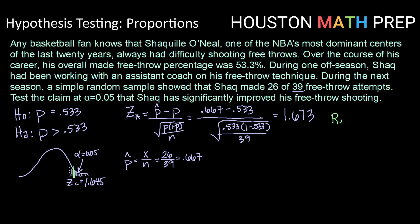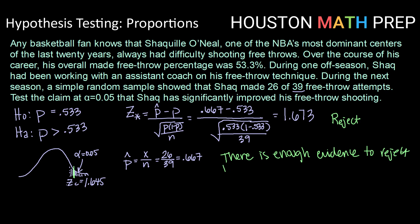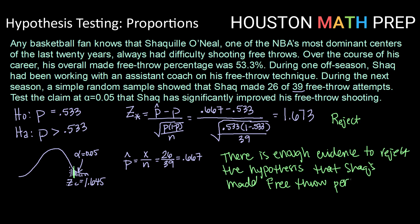So that means we would be rejecting the null hypothesis. We can say there is enough evidence to reject the null hypothesis that Shaq's made free throw percentage is still at 53%. So it does appear, based on this test, that he did significantly improve his free throw shooting.